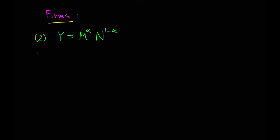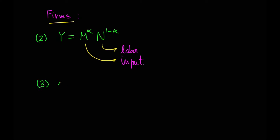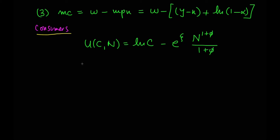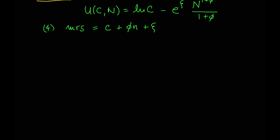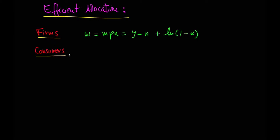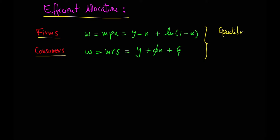The other agent in this economy is firms. We have a standard Cobb-Douglas production function, where the marginal cost is associated with the nominal wage and the marginal productivity of labor. On the other side we have consumers, with the standard utility function. The optimal allocation for firms and consumers is defined by the first order condition. So in equilibrium, the marginal productivity of labor is equal to the marginal rate of substitution, and that is what we call the first best.